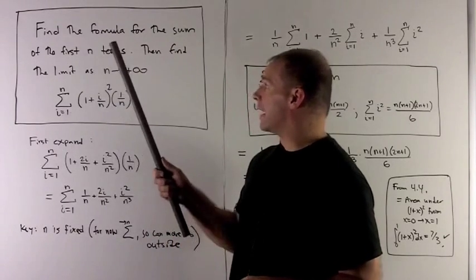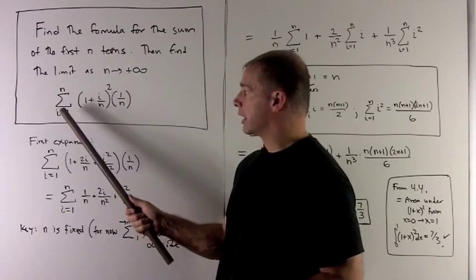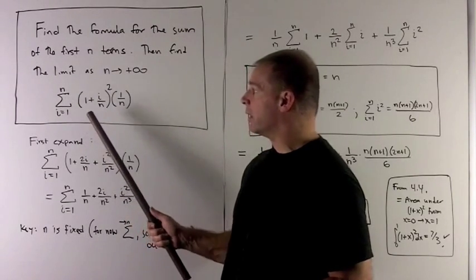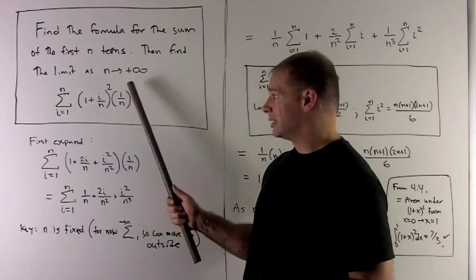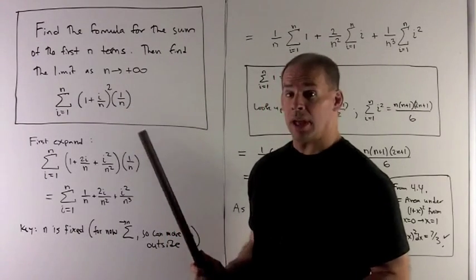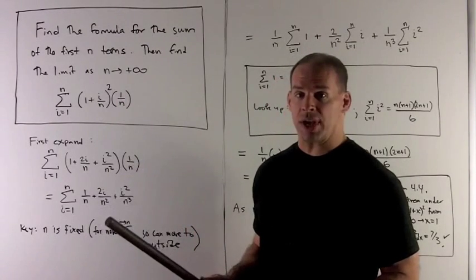Our problem is, find the formula for the sum of the first n terms, sigma notation of (1 + i/n) squared times 1/n, and then I want to take that and find the limit as n goes out to infinity.